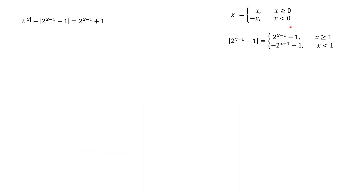Combining the conditions for |x| and |2^(x−1) − 1|, the form of the absolute values changes when x crosses 0 and when x crosses 1. This gives us three intervals: x < 0, 0 ≤ x < 1, and x ≥ 1. On each interval, the formulas for the absolute values remain constant.